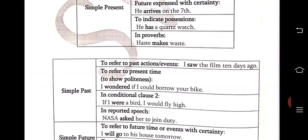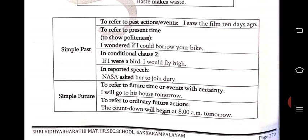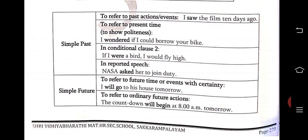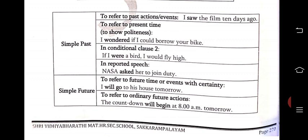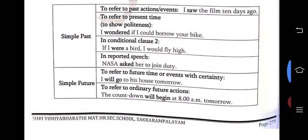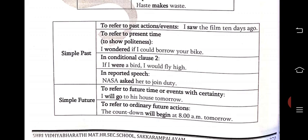Simple future: we use it for future time or events with certainty — 'I will go to his house tomorrow.' There is a certain thing, so we use simple future. To refer to ordinary future action we definitely use 'will' — 'will go', 'will begin.' Formula for simple past: subject plus past verb (V2/ed) plus object. For future: subject plus will or shall plus verb plus object.